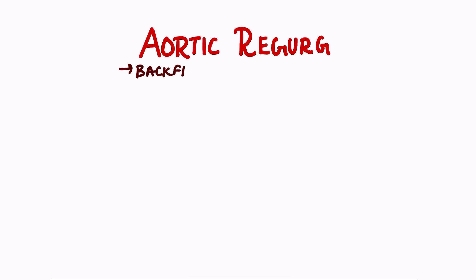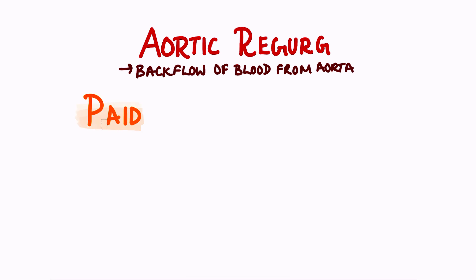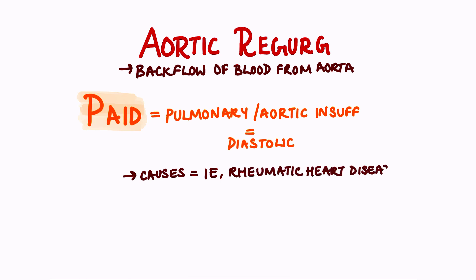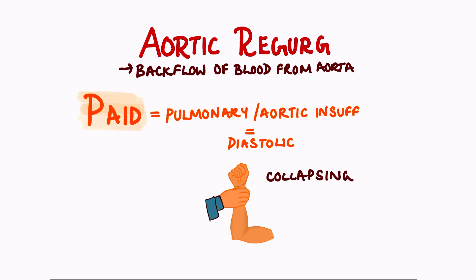Aortic regurgitation is when there is a backflow of blood from the aorta back into the left ventricle. We previously used PASS for aortic stenosis; now we use the second part of the mnemonic: PAID, which stands for Pulmonary/Aortic Insufficiency equals Diastolic. Causes include factors that damage the valve such as infective endocarditis, rheumatic heart disease, and in some genetic conditions such as Turner syndrome, people can have a bicuspid aortic valve. This murmur can cause a collapsing pulse, meaning the pulse is initially bounding and then reduces in power.